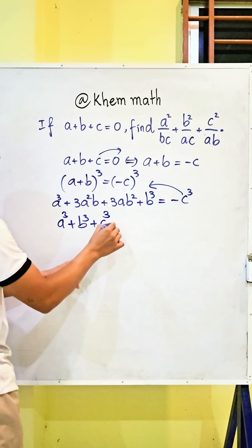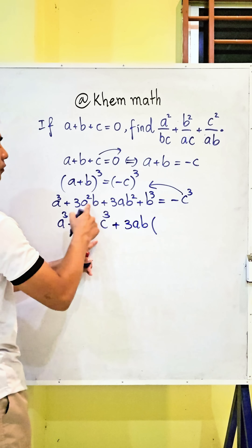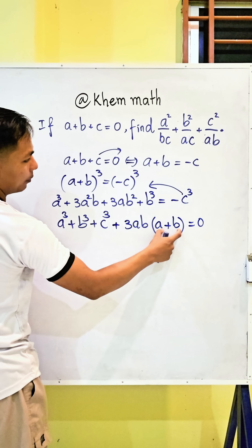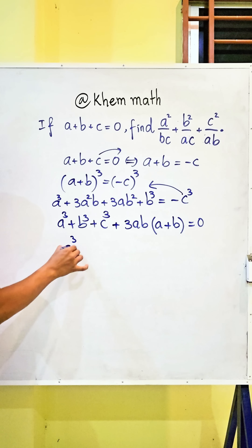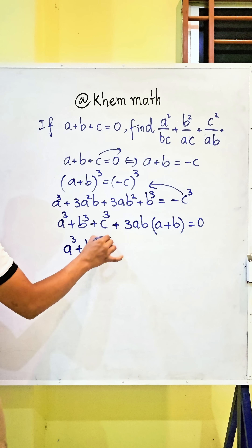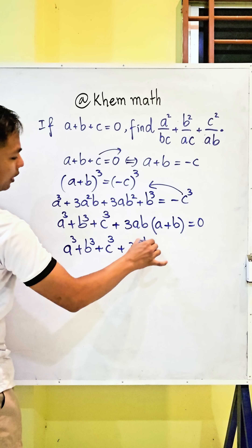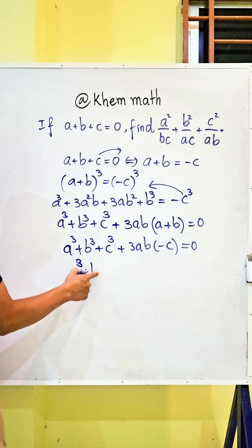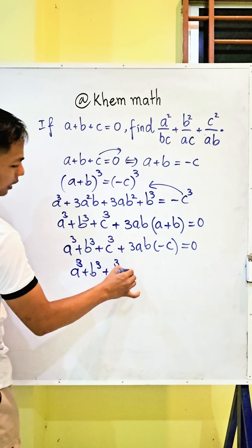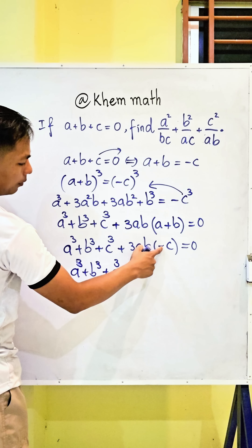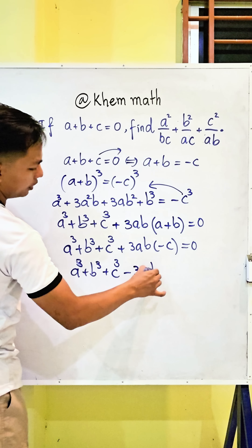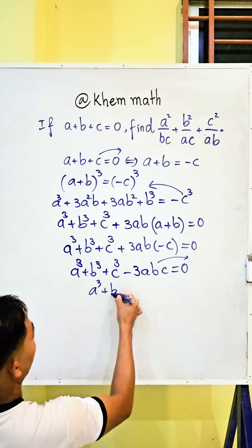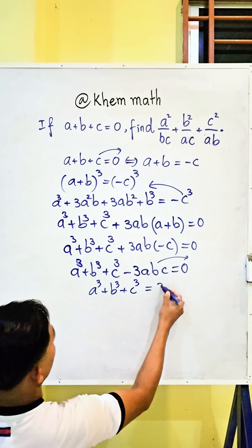Here we factor out three abc. We get three ab times a plus b, equals zero. And since a plus b equals negative c, we substitute to get a power three plus b power three plus c power three, plus three ab times negative c equals zero. So a power three plus b power three plus c power three minus three abc equals zero. Moving three abc to the right hand side gives us a power three plus b power three plus c power three equals three abc.